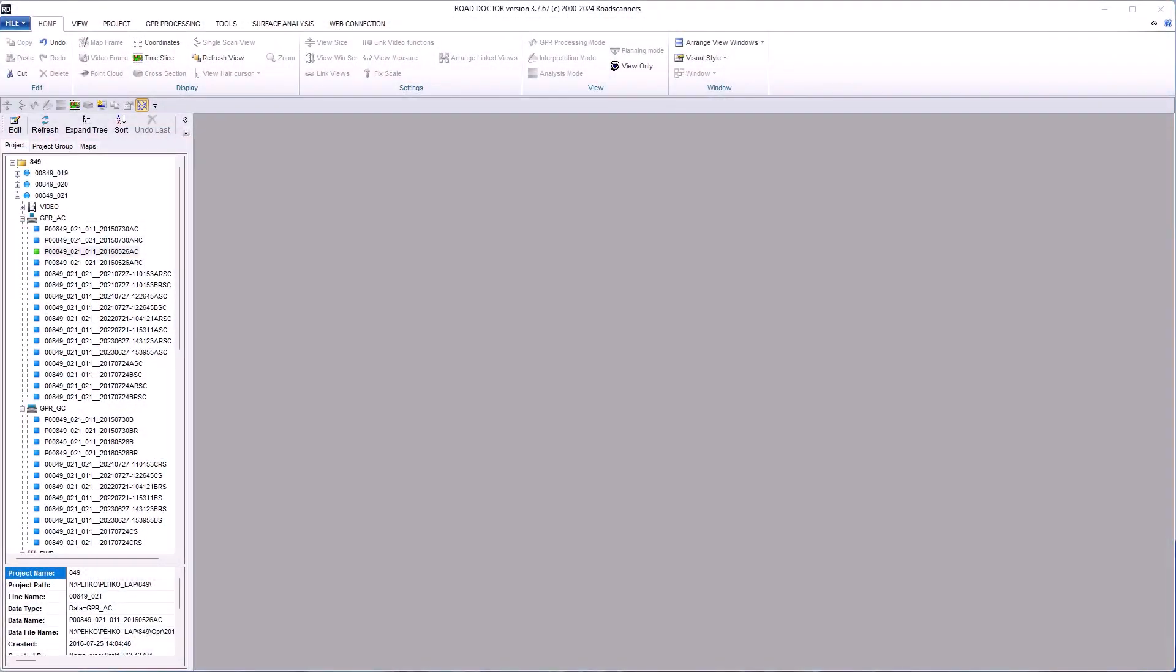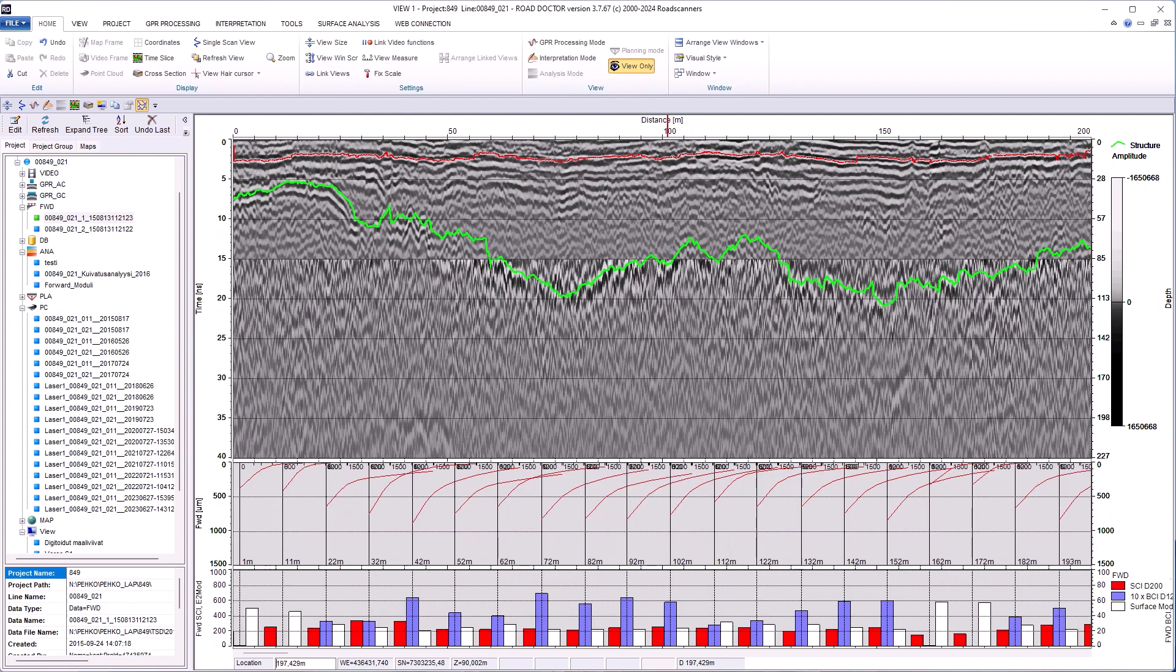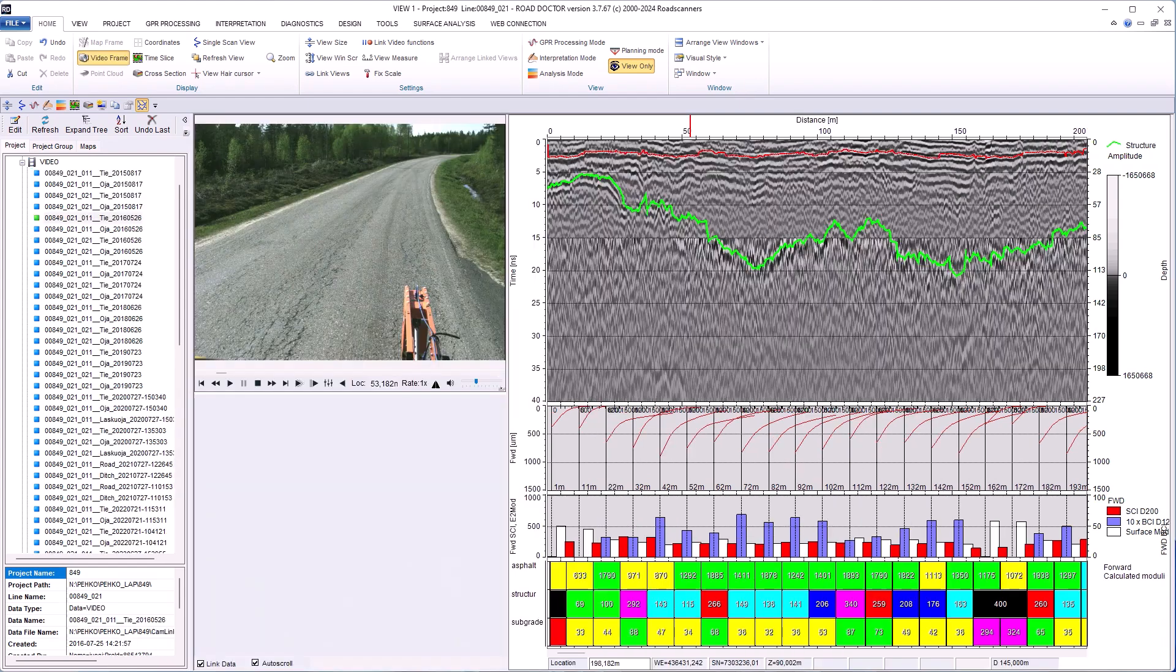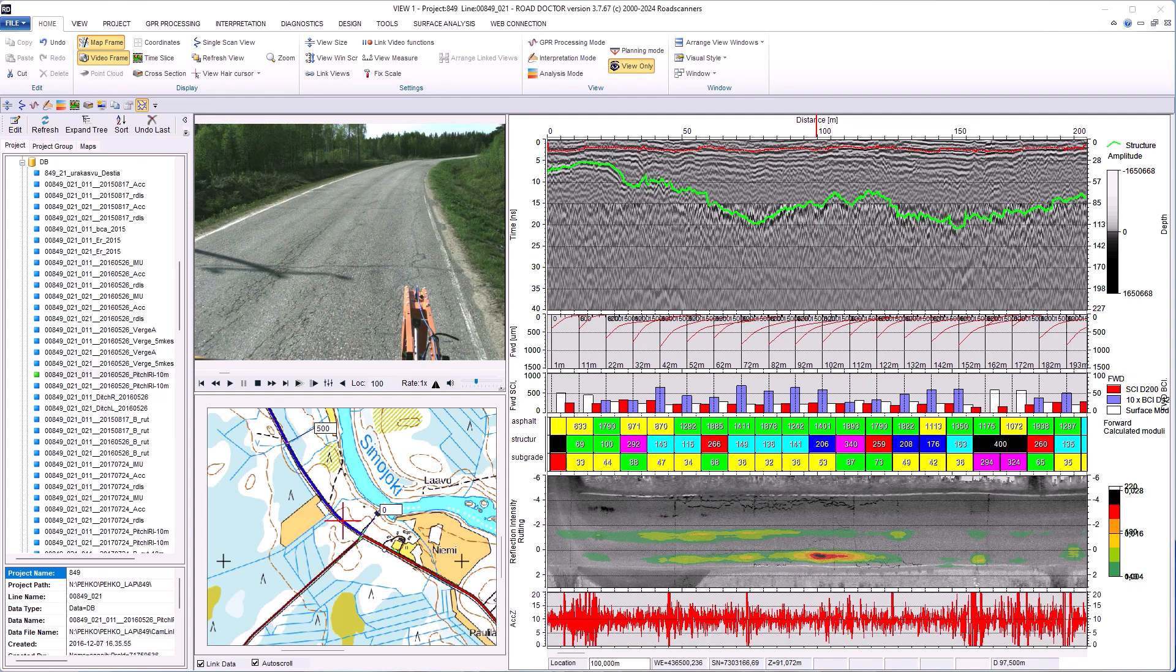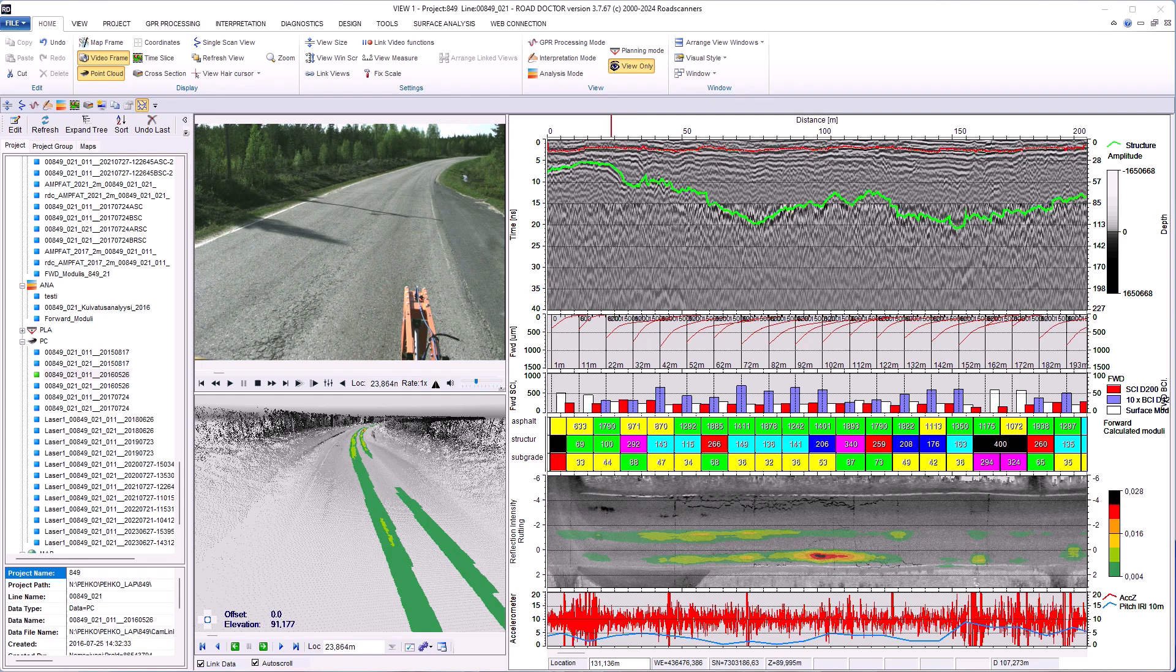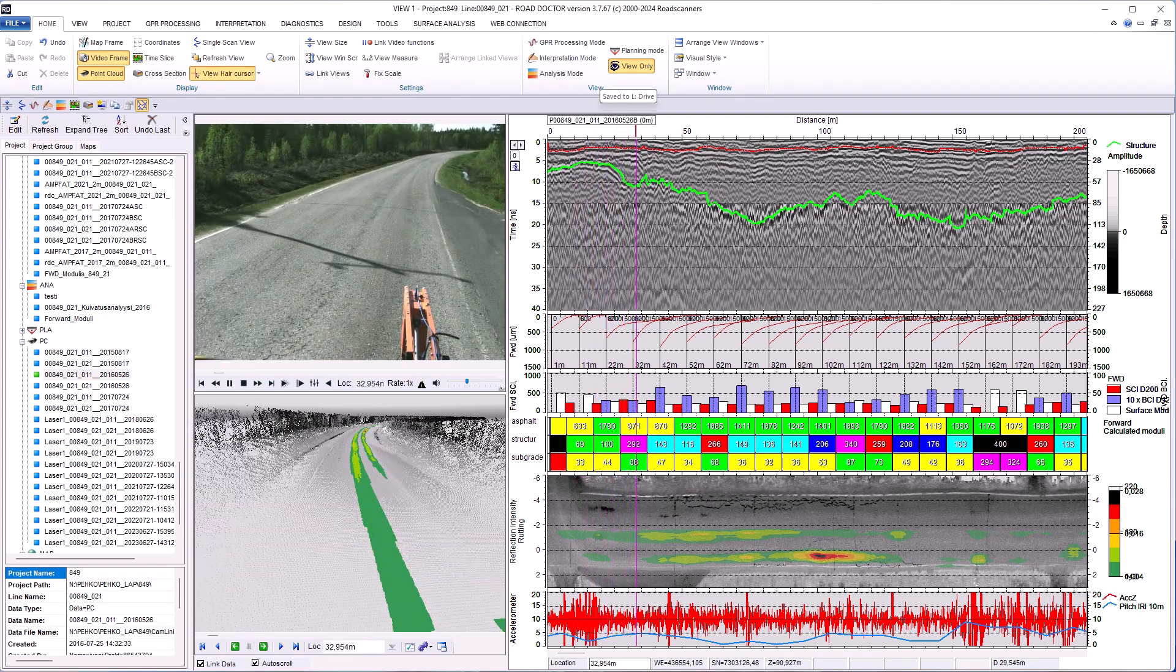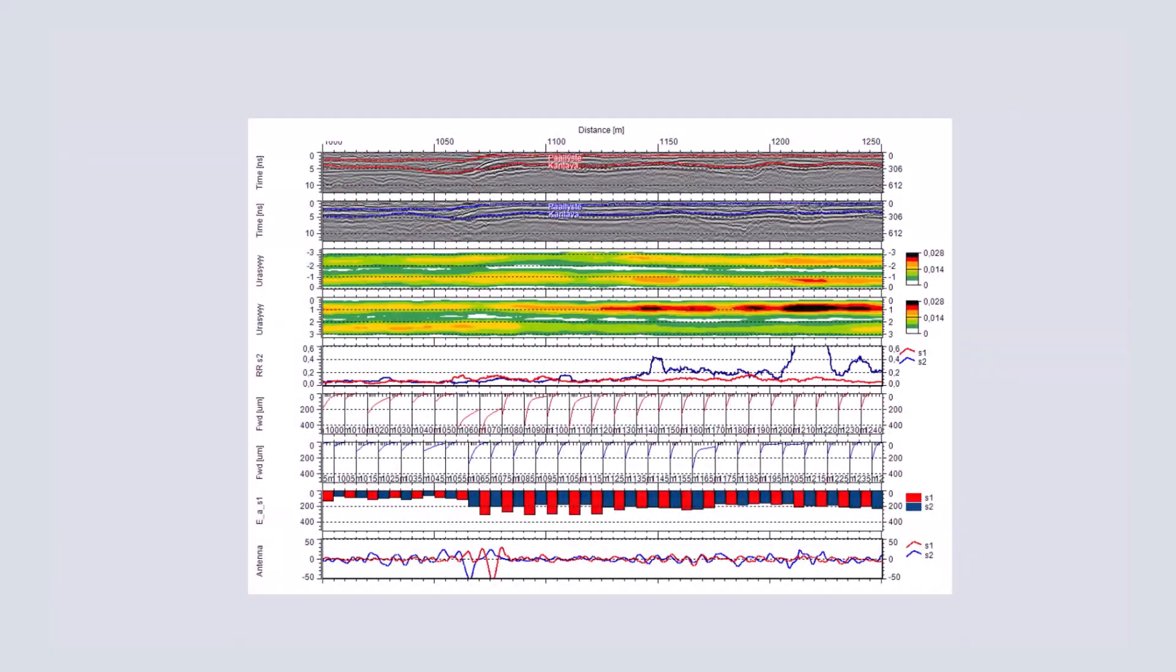The integration of deflection and GPR analysis in RoadDoctor software offers several significant benefits for road diagnostics and management. Combining deflection and GPR data within the same software package allows for a seamless integration of surface and subsurface insights. This provides a holistic view of the pavement's structural health, leading to more accurate and comprehensive diagnostics.